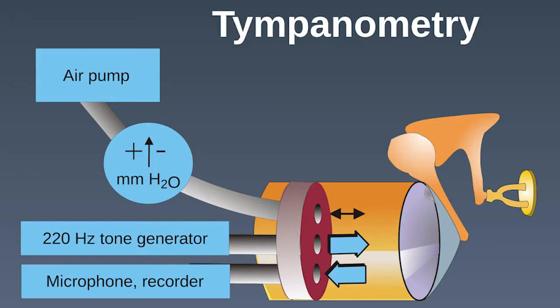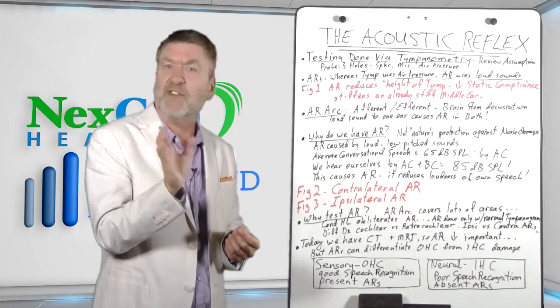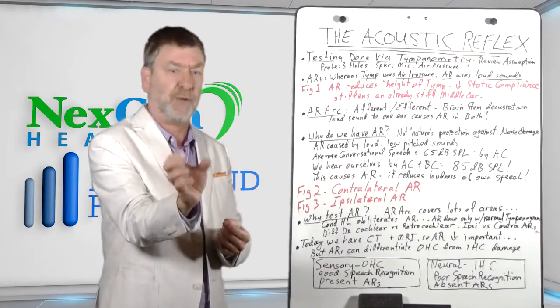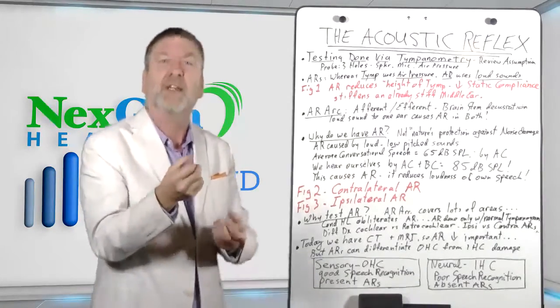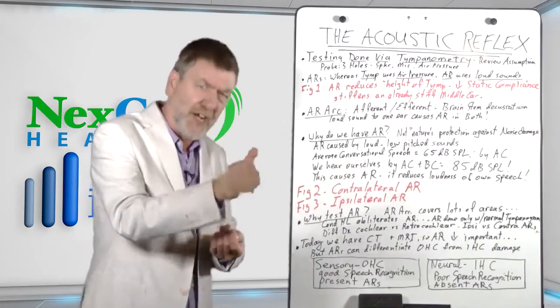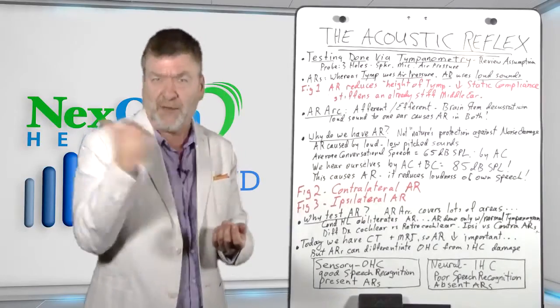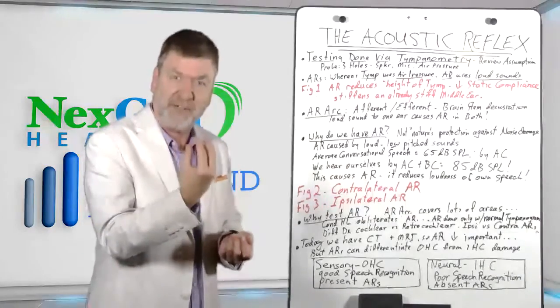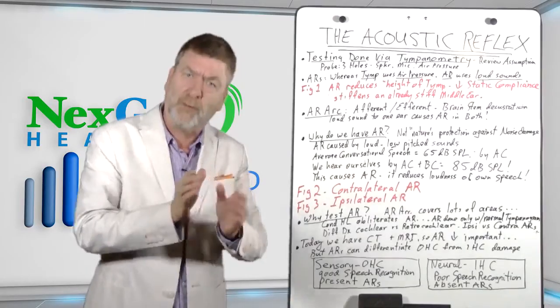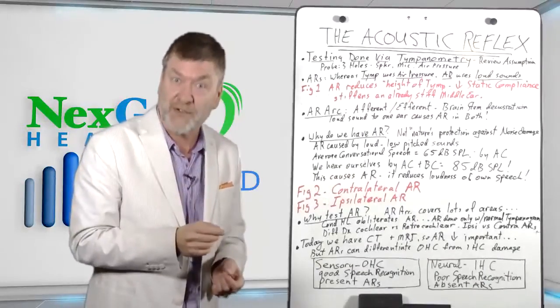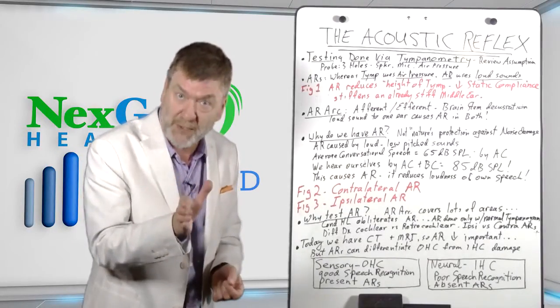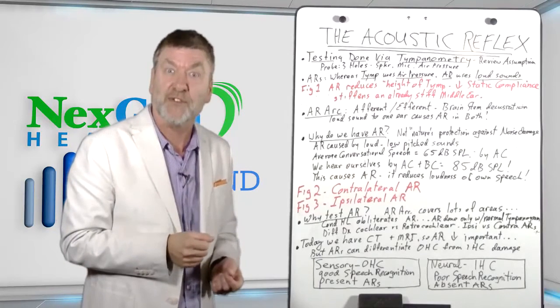Whereas tympanometry uses different air pressures to alter the amount of sound bouncing off the drum, the acoustic reflex doesn't use air pressure. It holds the air pressure at regular room air pressure because only people with normal tympanograms can really be tested with acoustic reflexes. Otitis media will have absent reflexes. They're not going to get through fluid nor through negative air pressure. Really it's people who have normal hearing and people with sensorineural hearing loss, a big population, who have normal middle ear status and therefore normal tympanograms. These are the people that can be tested with acoustic reflexes.